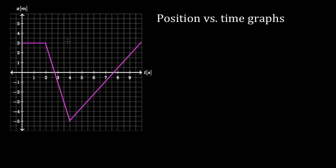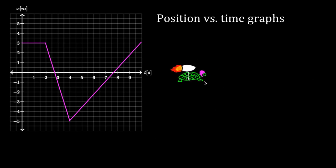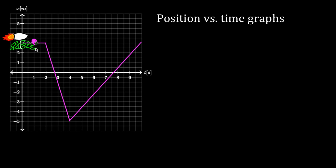This graph represents the motion of an object. Instead of just saying 'object,' let's make it specific — let's say it's a turtle. A turtle with a jet pack on its back. And let's put a helmet on this turtle — a pink helmet. Now we've got turtle safety. So let's say this turtle's moving around, and this graph represents the motion of this particular turtle.